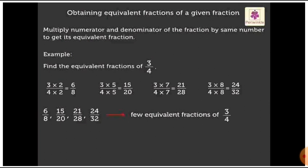I will explain with an example. Find the equivalent fractions of 3 by 4. To get the equivalent fraction of 3 by 4, you can multiply both 3 and 4 by the same number. If I take 2, multiply 3 with 2 and 4 with 2: 3 twos are 6 and 4 twos are 8. So 6 by 8 is the new fraction you get. Here, 6 by 8 is an equivalent fraction of 3 by 4.